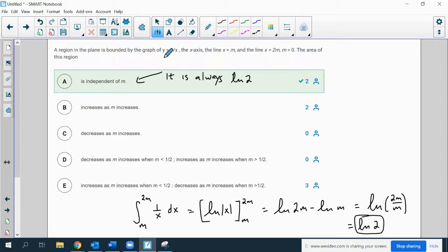Region in the plane is bounded by the graph of y equals 1 over x, the x axis, the line x equals m, and the line x equals 2m. So here's the graph of 1 over x, here's m and 2m. They want to know something about this area and what happens if m changes.